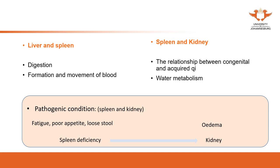This relationship also reflects in pathological changes. These kinds of changes are sometimes called the impairment between wood and earth — that's over-acting or insulting.